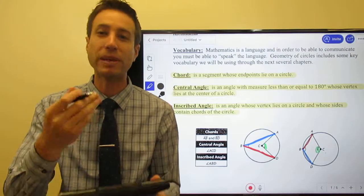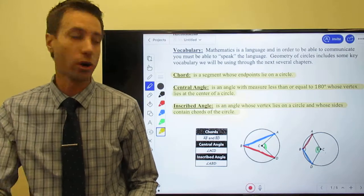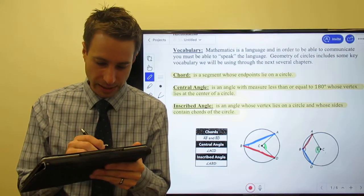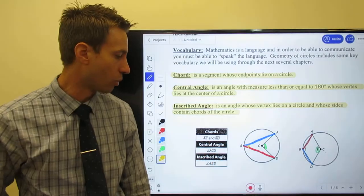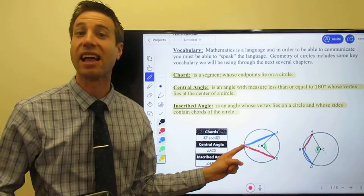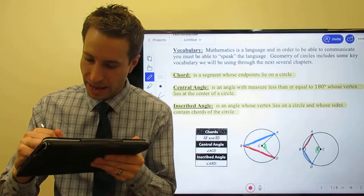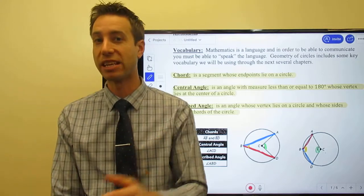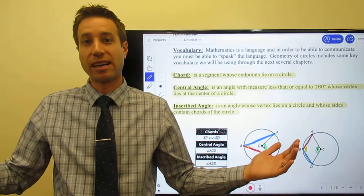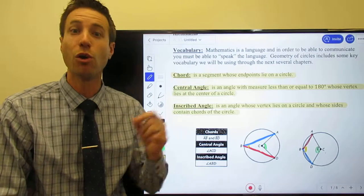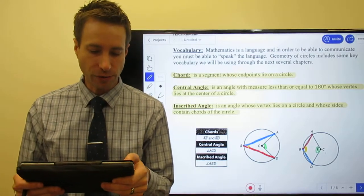Next term: inscribed angle. An inscribed angle is an angle whose vertex lies on the circle, and whose sides are chords. For example, angle B — or angle ABD or DBA — is an inscribed angle because the vertex, point B, lies on the circle, and the sides of the angle are chords. Make sure you can tell the difference between a central angle and an inscribed angle, and know when a line is a chord or not.